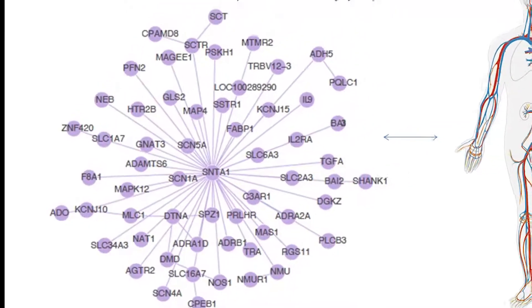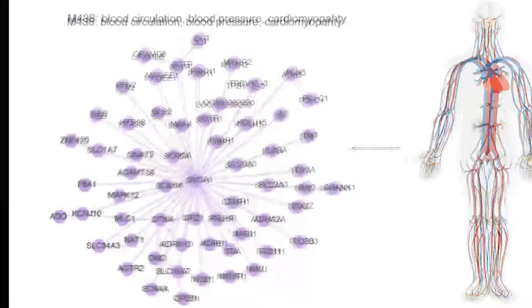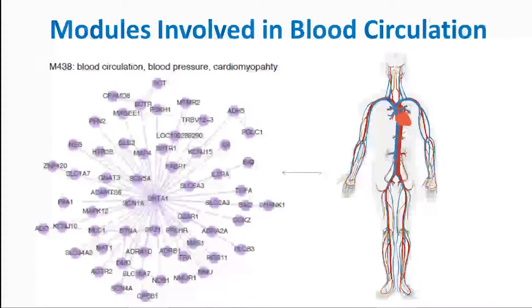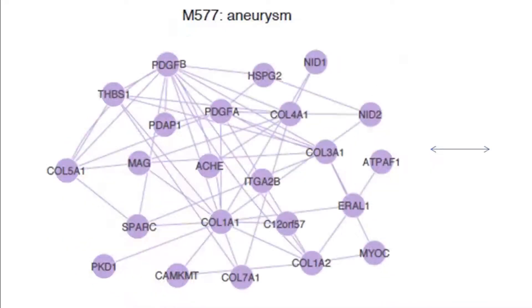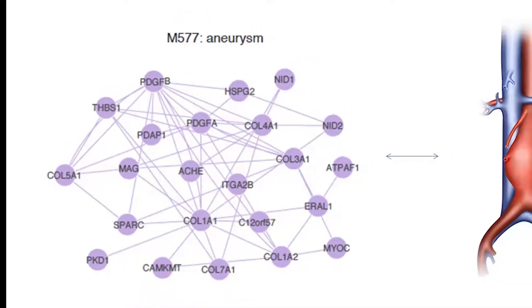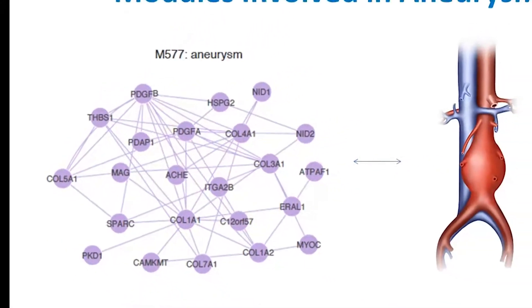Some of the genes and their interacting partners function in blood vessel development, blood circulation, and aneurysm. So they are really just the sort of genes that you might expect to be involved in this disease.